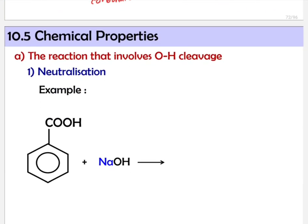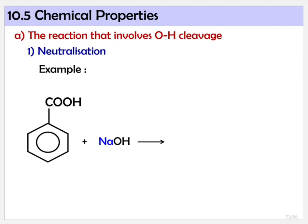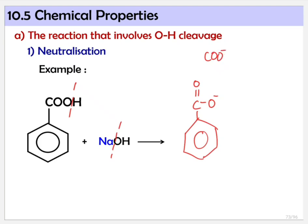Let's go to the example. For neutralization, you need to know where the cleavage is — hydrogen comes out and OH comes out. Salin balik (copy back) what is not involved in the reaction. So this will become COO⁻, and it will be bonded with Na from NaOH, plus H2O. That's the product of our neutralization.